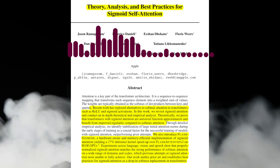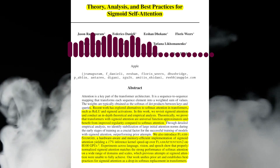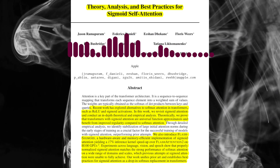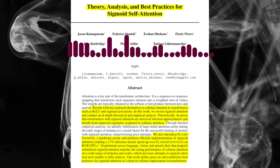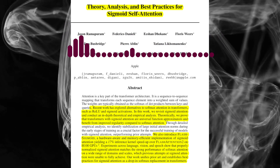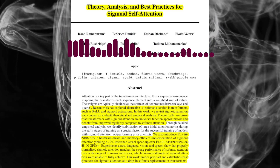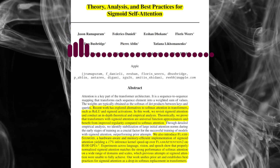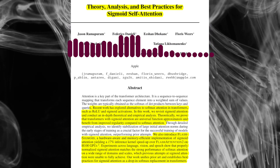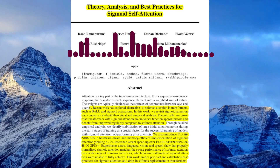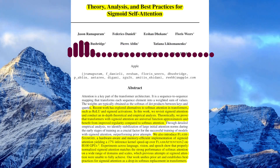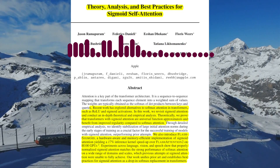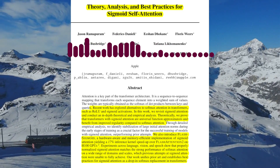But how does this change affect the theoretical properties of the transformer architecture? The paper provides theoretical guarantees that transformers with sigmoid attention retain the universal approximation property (UAP), meaning they can still approximate any continuous sequence-to-sequence function to arbitrary precision. Furthermore, the authors analyze the regularity of sigmoid attention and show that it has a lower Lipschitz constant compared to softmax attention, suggesting that transformers with sigmoid attention might be more robust and easier to optimize.